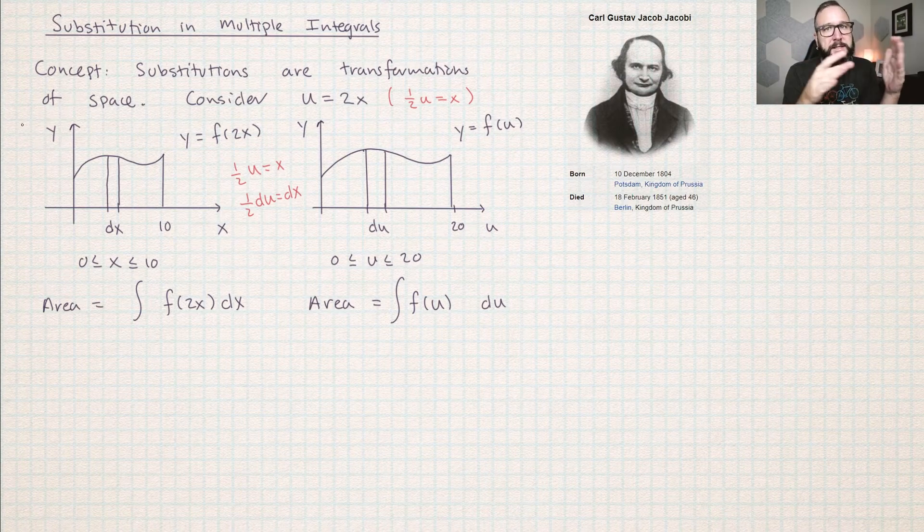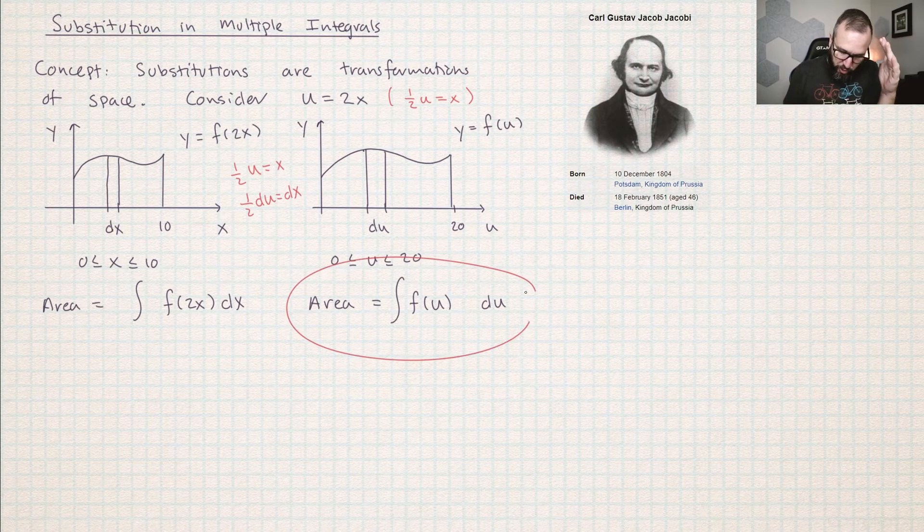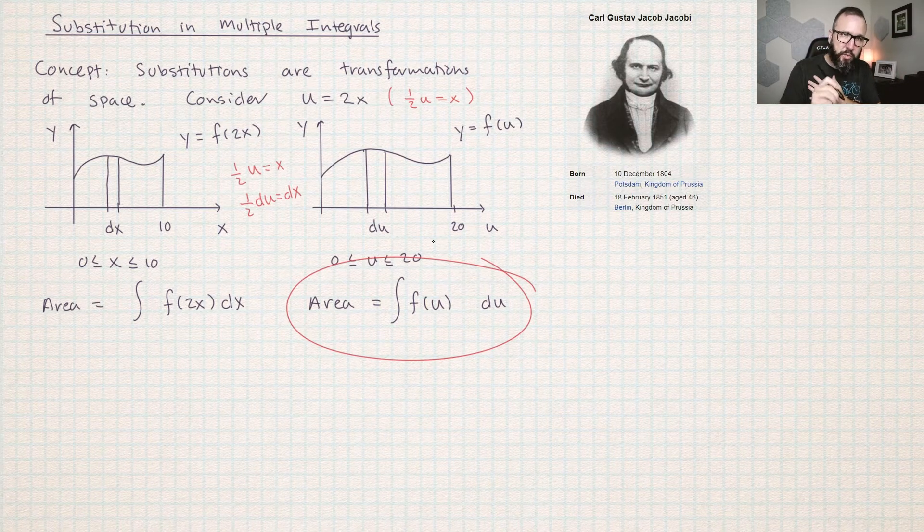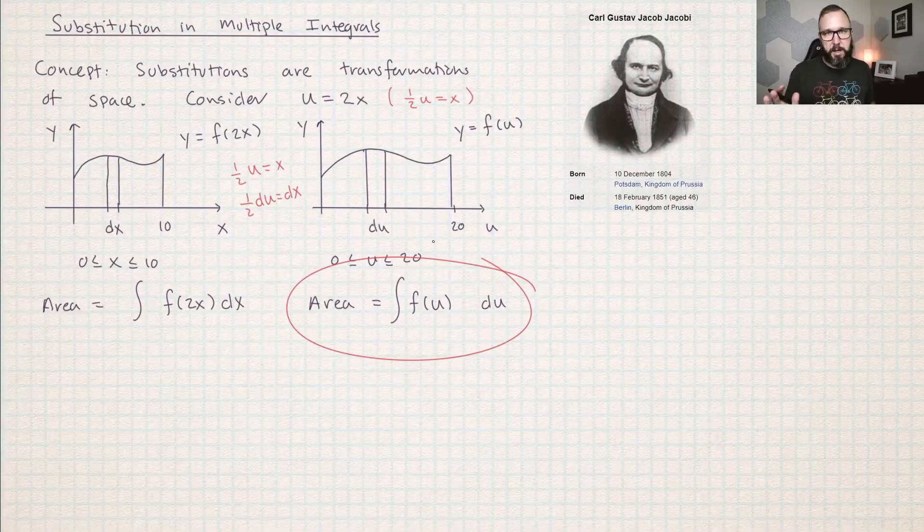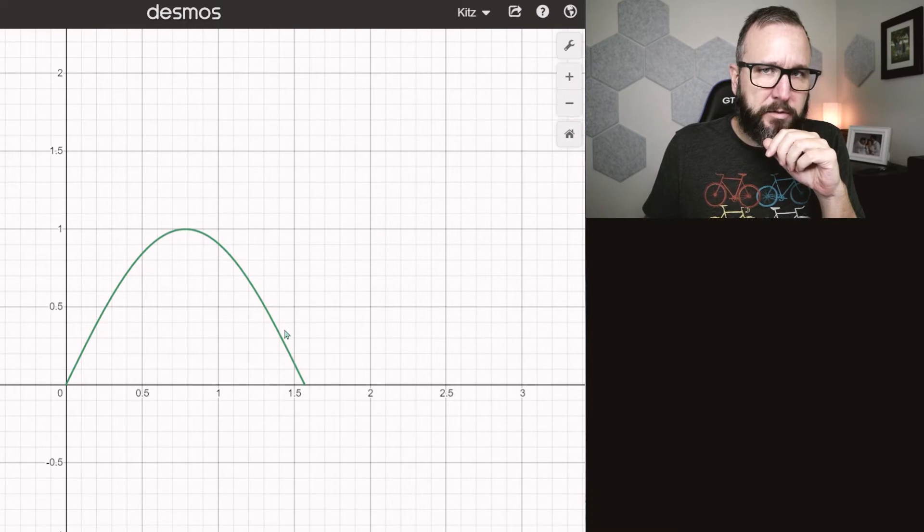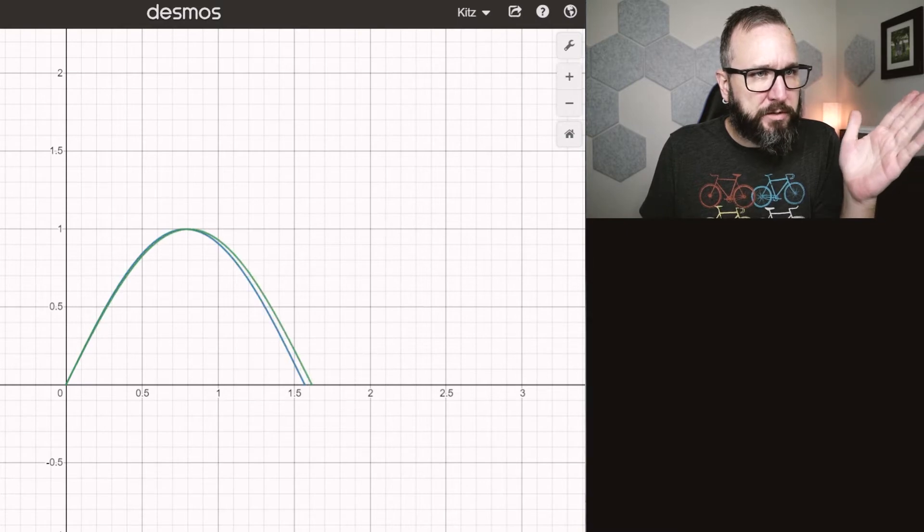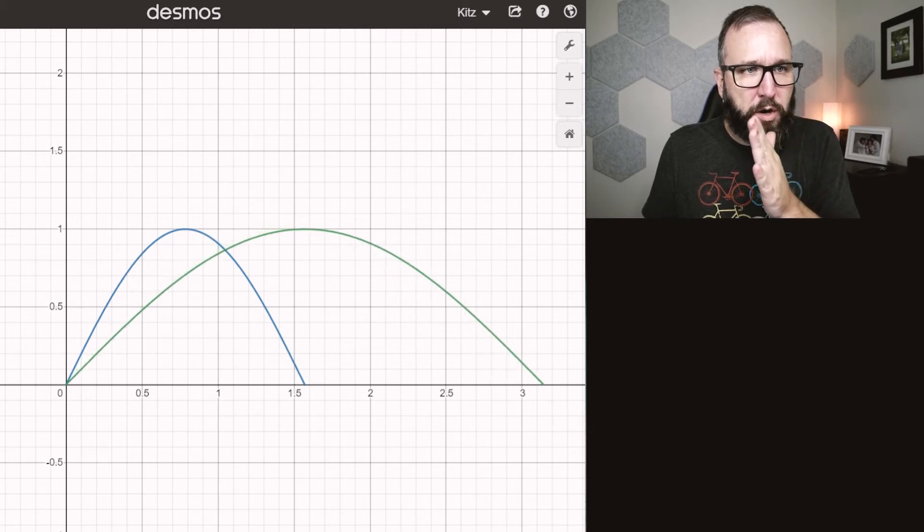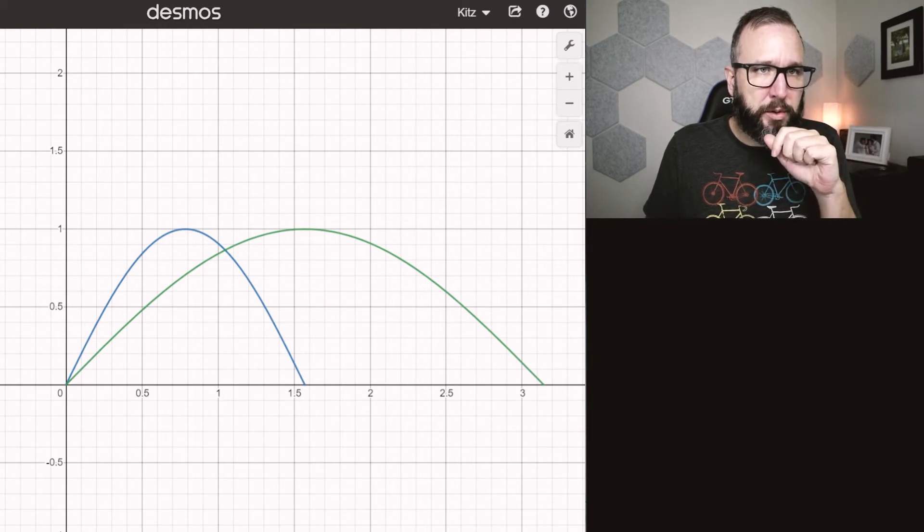So what we're going to have to do is account for that. If we want to calculate the area in x,y space using u,y space, we're going to have to scale our answer back down because the area in u,y space is obviously bigger. The question is, how much do we have to scale the area down by? Just to convince you that this is working the way that it's supposed to, I have a graph of just a half of a sine curve. I'm going to apply this transformation of space as an animation so we can watch this area get stretched out. Hopefully you can see that the area under the green curve is much larger than the area under the blue curve.